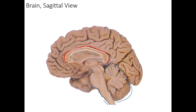Just above the pericalosal sulcus is a special gyrus — some refer to it as a cortex. It's not part of the frontal cortex; it's not part of the parietal cortex. This gyrus is called the cingulate gyrus. I'm filling in the cingulate gyrus here in yellow. Just above the cingulate gyrus we will find the cingulate sulcus.